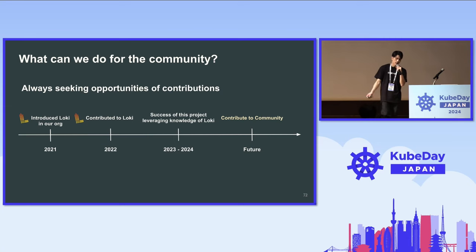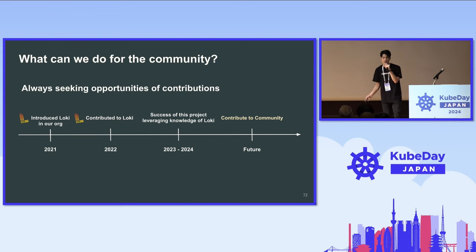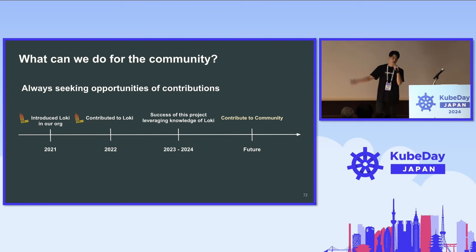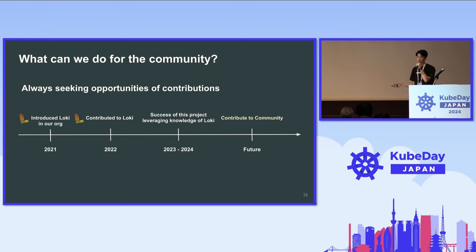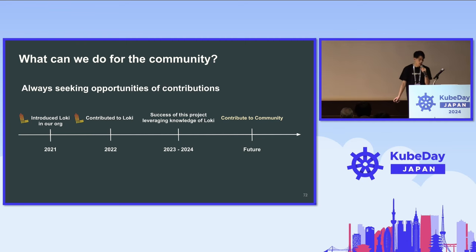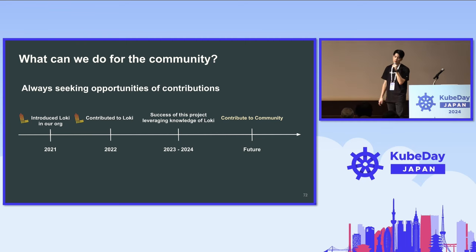We are always seeking opportunities to contribute our knowledge to the community. This project's success really relied heavily on experimental contributions to Grafana and Loki. By leveraging those experiments, we attained this architecture. We really want to share our knowledge with communities so that time series databases and other open source products for observability get more mature. Let's talk and discuss.